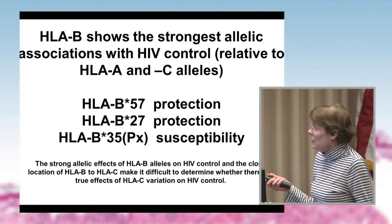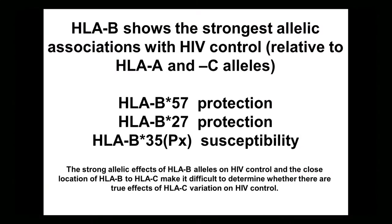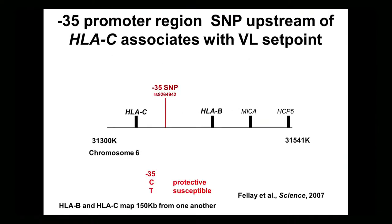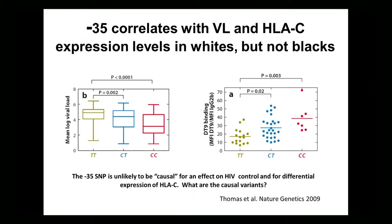The example I'd like to discuss is HIV control. We know there are HLA-B alleles that have been shown consistently to associate with HIV control, and I've just put three of those up here. The HLA-B locus is really key in terms of allelic effects on HIV disease. But recently, Jacques Fellay in David Goldstein's lab identified through a GWAS a variant between HLA-C and HLA-B that associated with viral load set point.